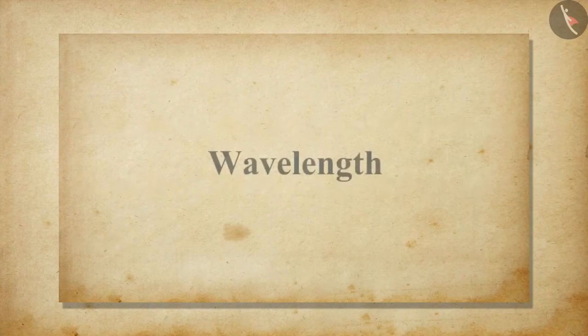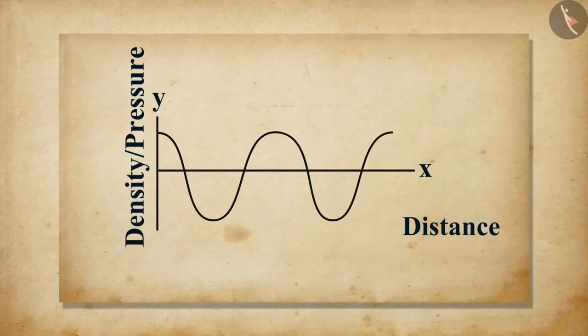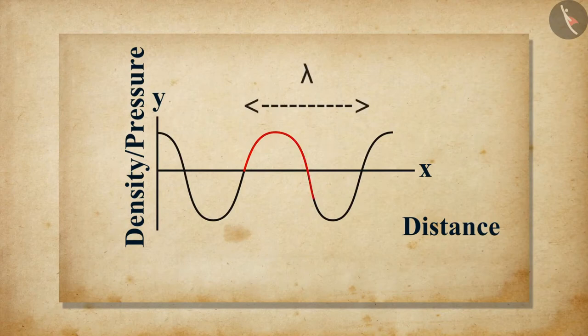The distance between two consecutive compressions or two consecutive rarefactions is called wavelength. Wavelength is denoted by lambda; its SI unit is meter. Whenever sound travels through a medium, the density of the medium changes from maximum value to minimum value and then again to maximum value, making one complete oscillation.